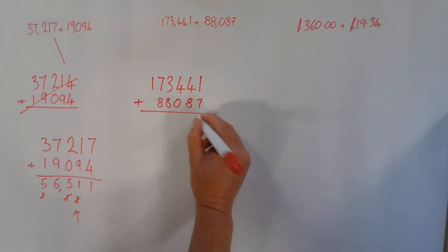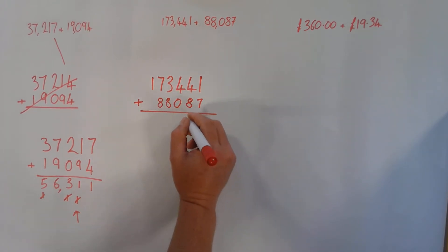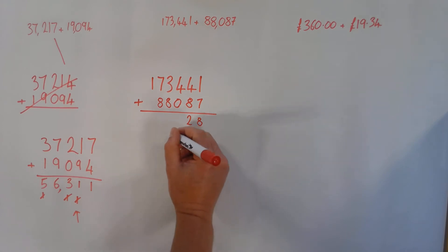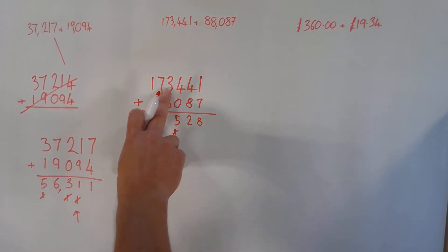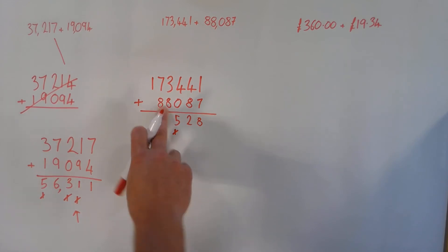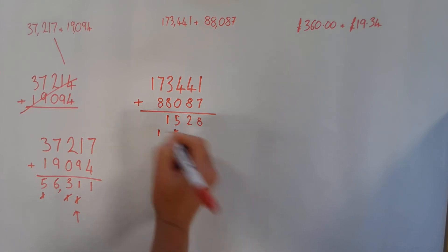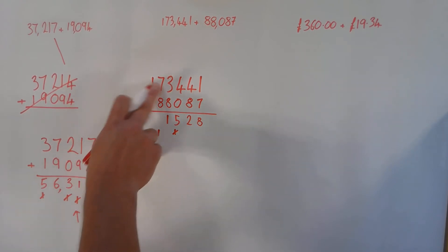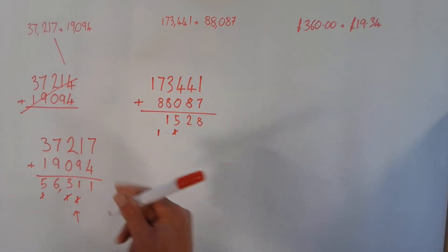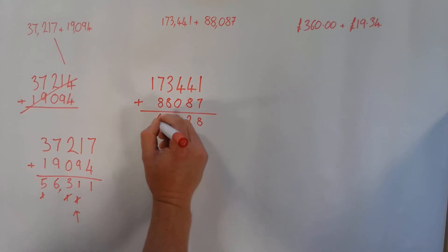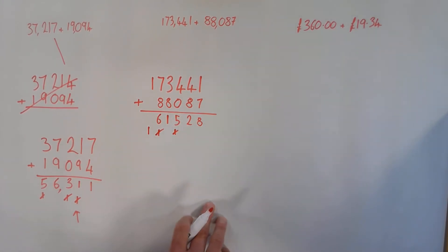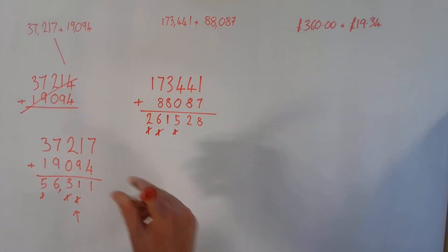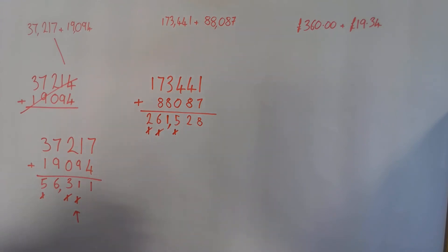Working through the second calculation: one plus seven ones gives eight ones. Four tens plus eight tens gives twelve tens — the two comes down and I carry one into the hundreds. Four hundreds plus zero hundreds plus one hundred gives five hundreds. Three thousands plus eight thousands gives eleven thousands — the one goes down and I carry one. Seven ten-thousands plus eight ten-thousands plus one carried ten-thousand: putting the one with the seven gives eight, and eight plus eight is sixteen ten-thousands — six goes down, carry one into the hundred-thousands. One hundred-thousand plus one hundred-thousand gives two hundred-thousand. My answer is 261,528.